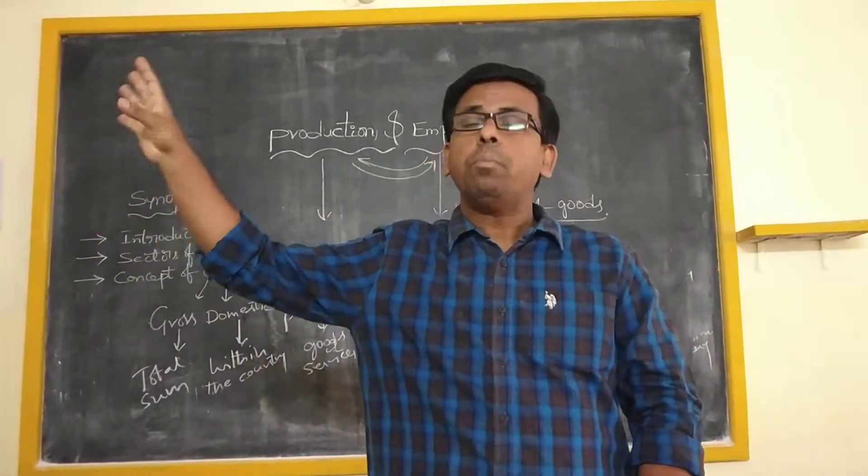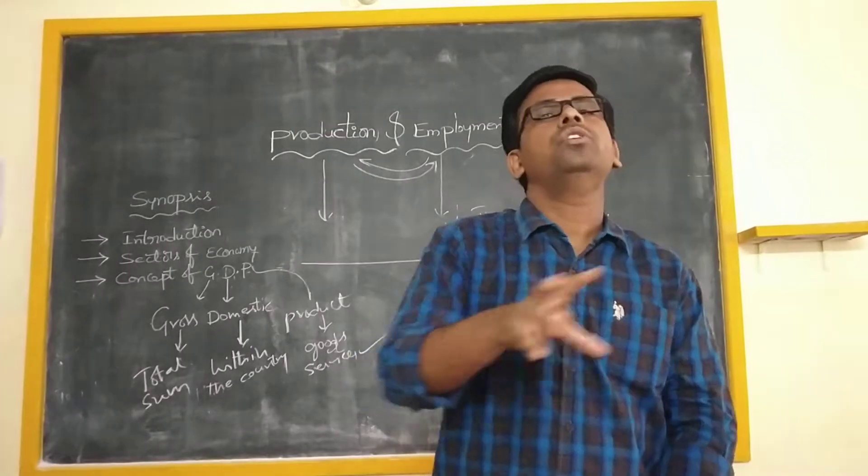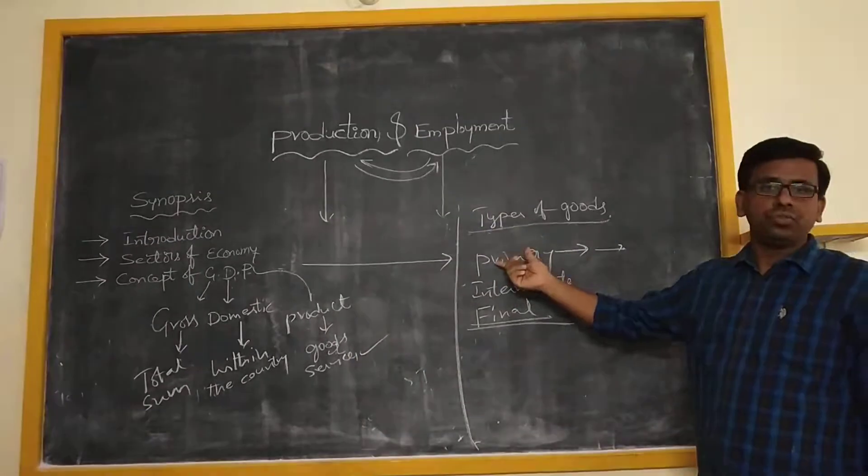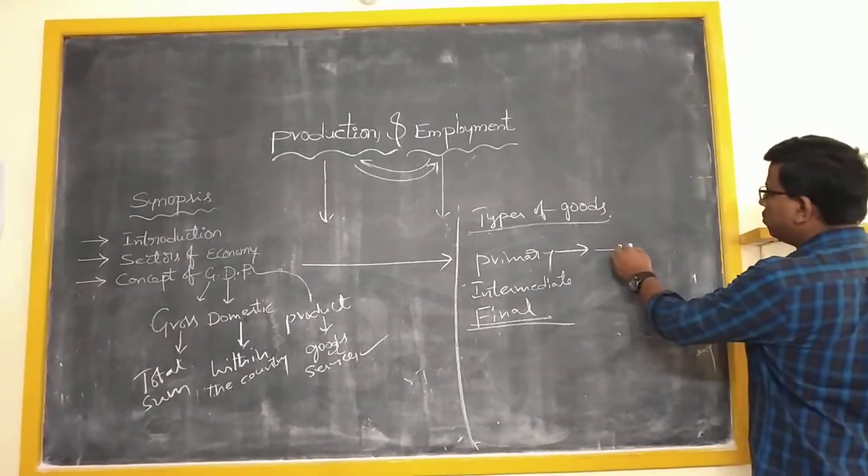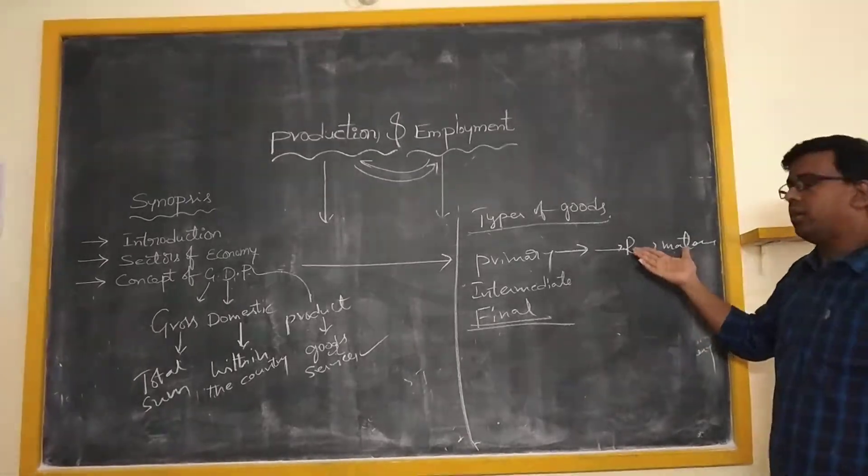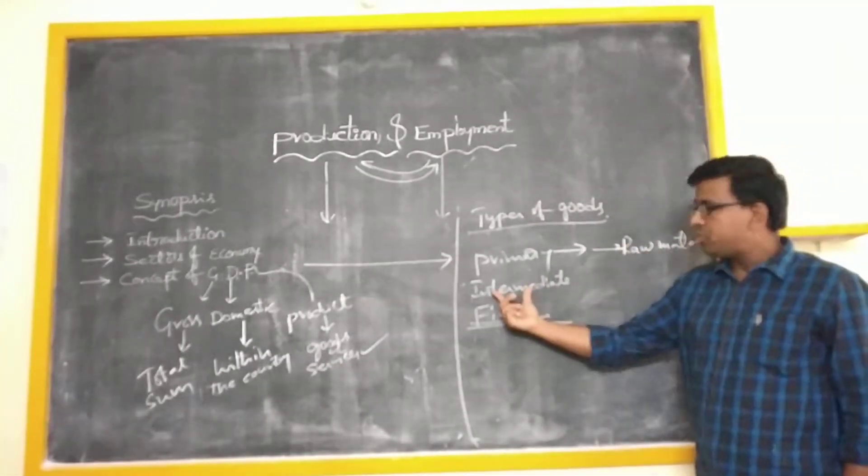And you can take iron ore, which will be in the form of raw material that we can obtain from nature. And that iron ore must go under a process. And finally, it can be seen in the form of a final good, for example, here in this case, a bicycle, which is ready for usage. So mostly here, primary goods are raw materials, which are directly extracted from nature.